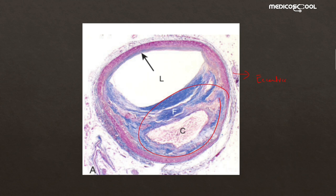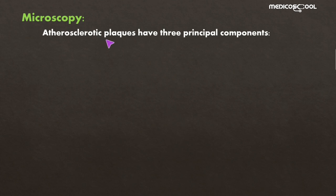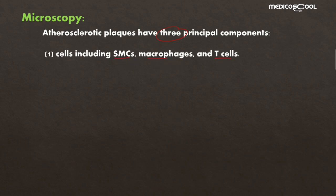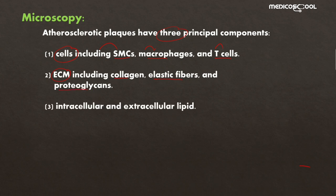The atherosclerotic plaque consists of a fibrous cap and a central core. Microscopically, atherosclerotic plaque consists of three principal components: first, cells including smooth muscle cells, macrophages, and T cells; second, extracellular matrix containing collagen, elastic fibers, and proteoglycans; third, lipids in the form of intracellular and extracellular lipids.